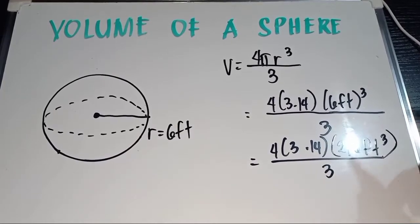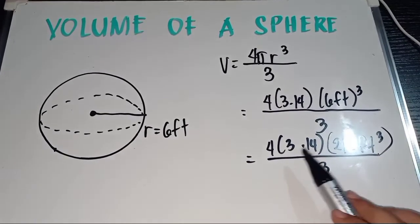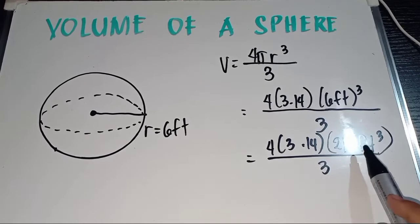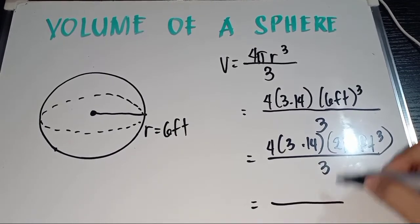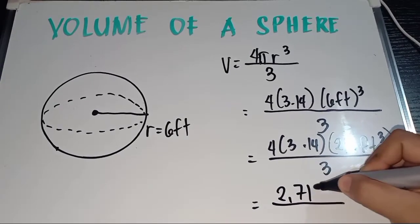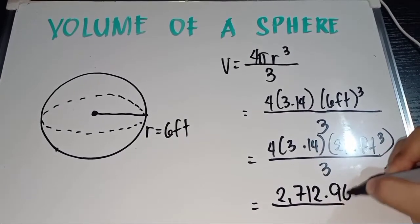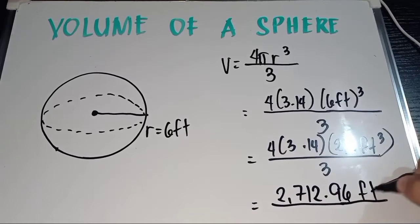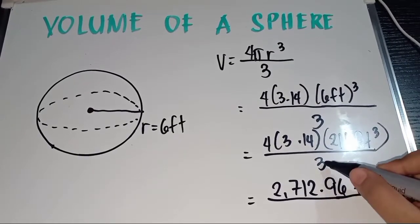Let us now multiply 4 times 3.14 times 216 cubic feet. The answer here is 2,712.96 cubic feet all over 3.